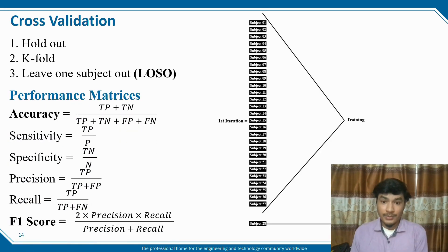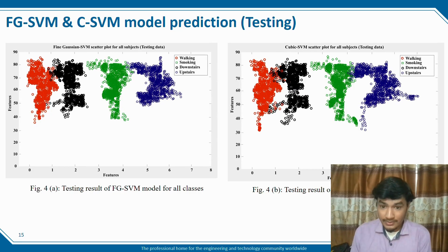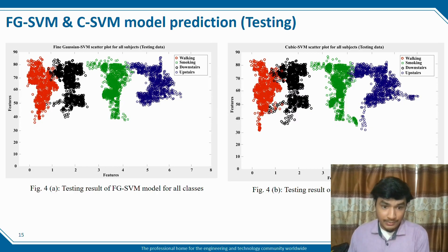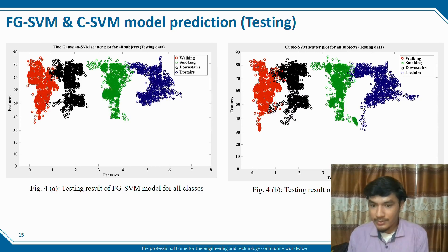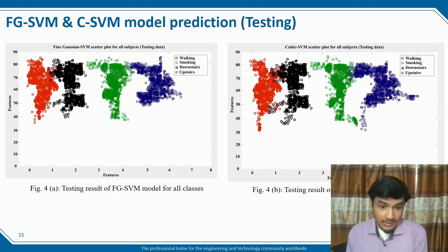Looking at the FGSBM and CHBM model prediction training: red data is walking, black data is downstairs, green data is smoking, and blue data is upstairs. FGSBM achieves highest accuracy with lowest overlapping, while CHBM shows highly overlapping clusters. Because of this overlapping, CHBM has the lowest accuracy and FGSBM has the highest accuracy.